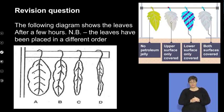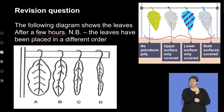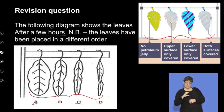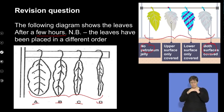Let's see what happens after a few hours. And you straight away are going to think, oh, this is easy. But there's a catch. Because the leaves are not in the same order as in the picture. They have been rearranged. And you basically have to work out which of these leaves here - A, B, C, or D - which of those has no petroleum jelly, both surfaces covered. This tests to see if you can understand what is actually happening in the experiment.